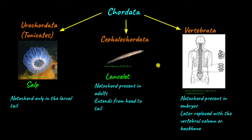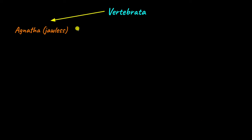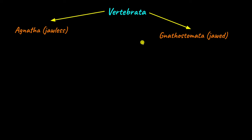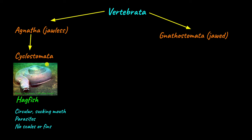Vertebrata is a huge subphylum, divided into two main divisions: Agnatha, which are jawless organisms, and Gnathostomata, which are jawed organisms. Agnatha don't have a muscular jaw while Gnathostomata do. There is one class classified under Agnatha, which is Cyclostomata. Cyclostomata, such as hagfish and lampreys, are marine organisms. They have a circular sucking mouth because they don't have jaws. They live as parasites on other fishes, but their body is not covered with scales, nor do they have any fins.